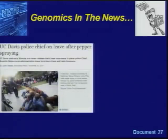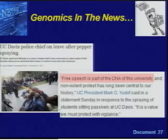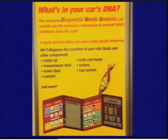On the strange news front: following a protest broken up with pepper spray at UC Davis, the UC president spoke about how free speech is part of the 'DNA' of the university. That same week, at a tire shop, I photographed a sign reading 'What's in your car's DNA? Our exclusive DNA — diagnostic needs assessment' — with a double helix graphic. So we now know that universities have DNA, and cars have DNA. With such developments, it's clear that our institute's portfolio of DNA research will only increase in the future.